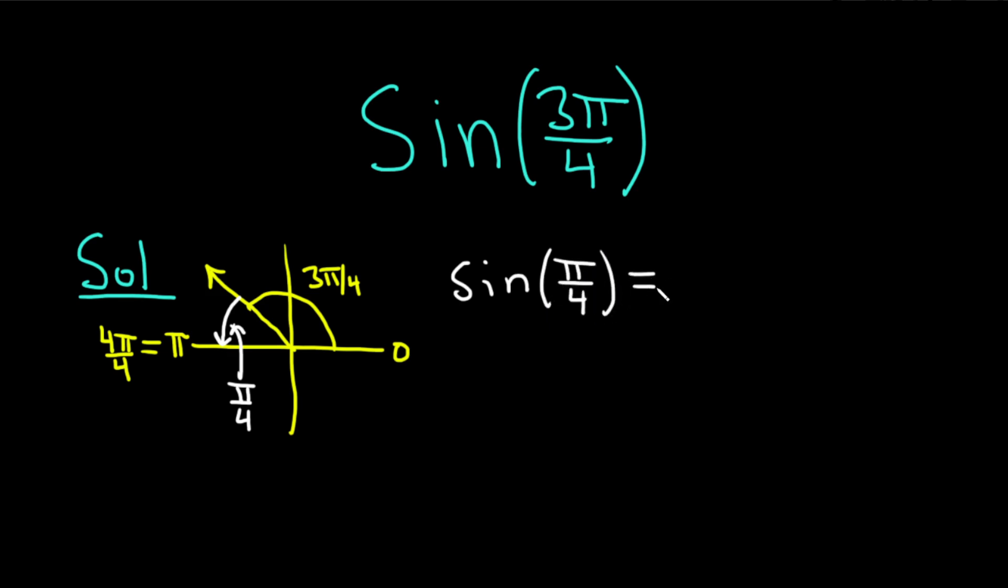This is equal to the square root of 2 over 2. That's just from memory. It's really easy because the cosine of pi over 4 is also the same.